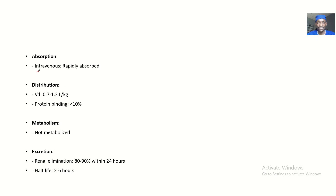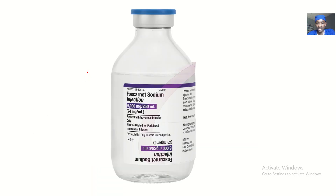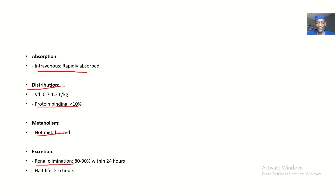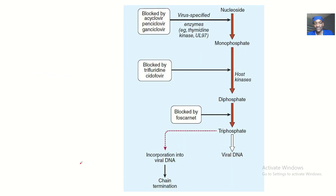Absorption: Foscanet is given intravenously and is rapidly absorbed. The volume of distribution is about 0.7 to 1.3 liters per kilogram. Protein binding is less than 10 percent. Metabolism: it is not metabolized. Excretion: about 80 to 90 percent is excreted within 24 hours. Half-life is about two to six hours.